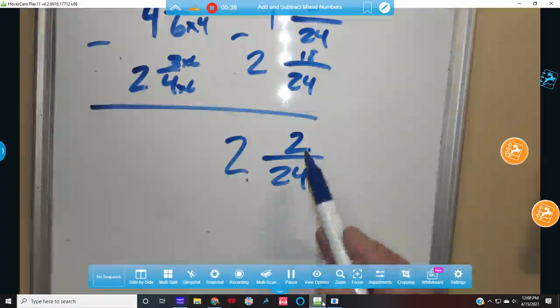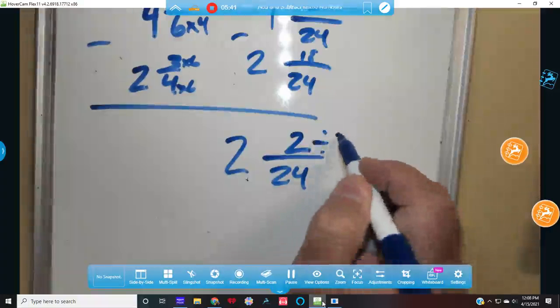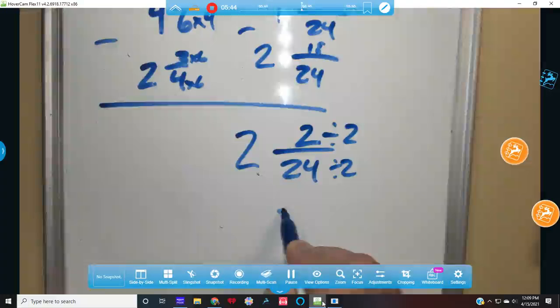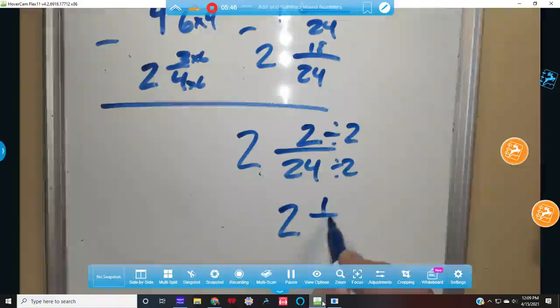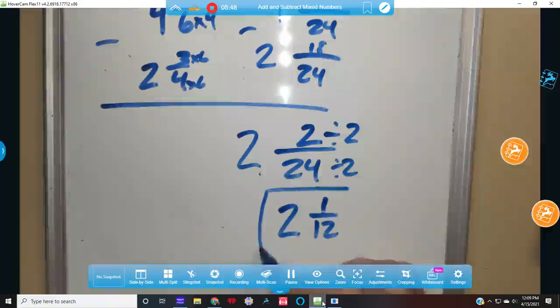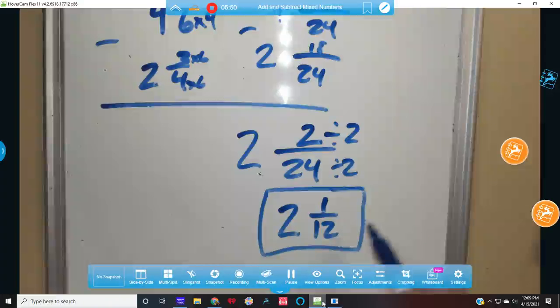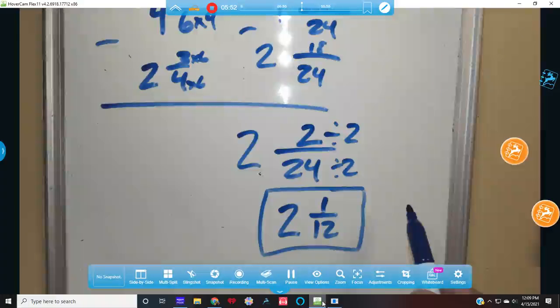Wrong. Divide by 2. Divide by 2. And my final answer is 2 and 1 twelfth. So, 2 and 1 twelfth. Is 2 and 1 twelfth almost just 2? Yep, for sure.